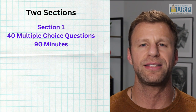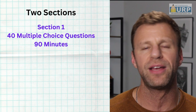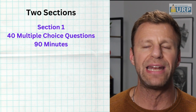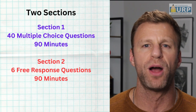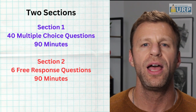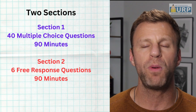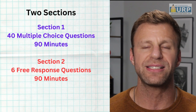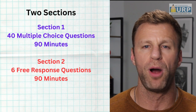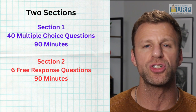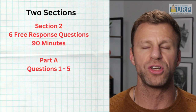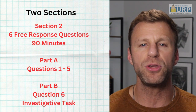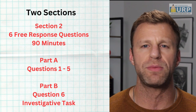When that's done, you're gonna take that 15-minute break and then 90 minutes for six free response questions. The free response test is split into two parts: part A, questions one through five, and part B, question six. But you do it all at the same time.